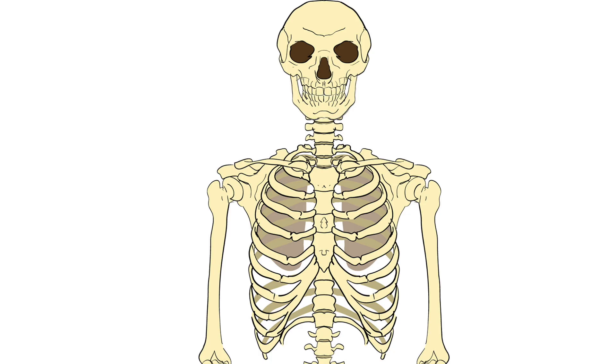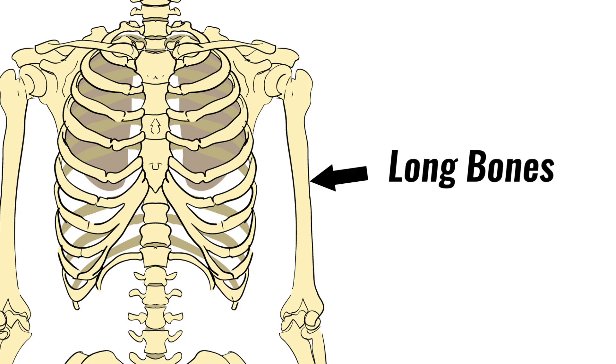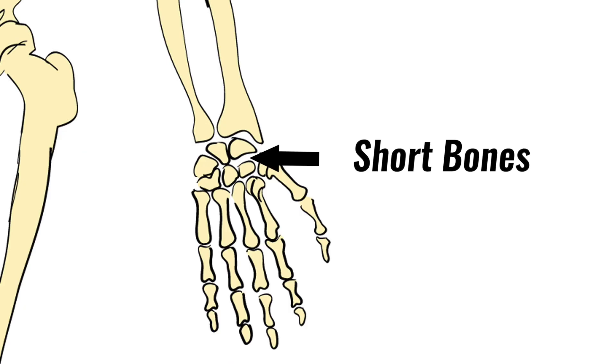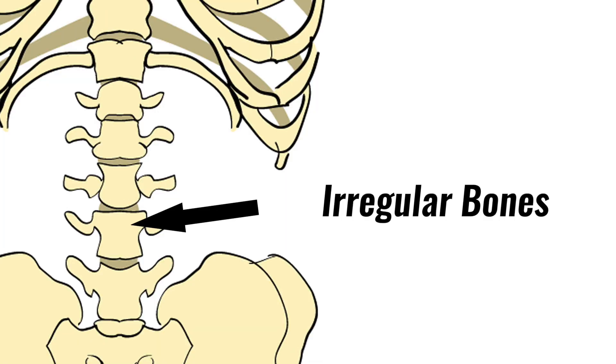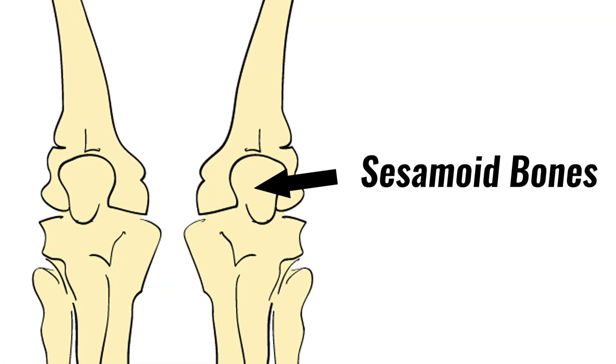There are five types of bone in the human body. These are long bones, short bones, flat bones, irregular bones and sesamoid bones.